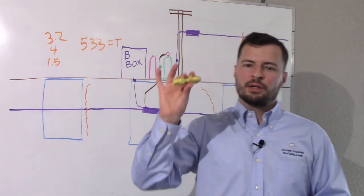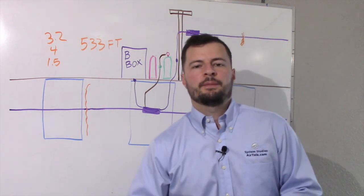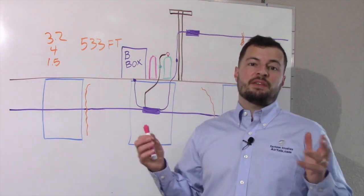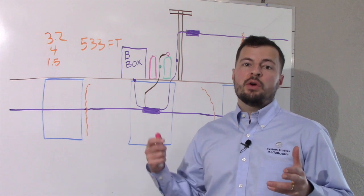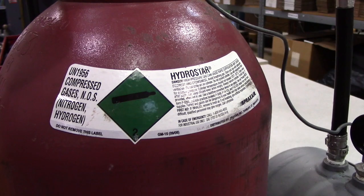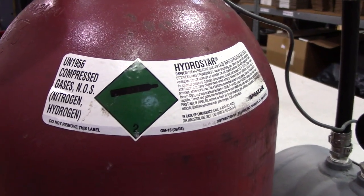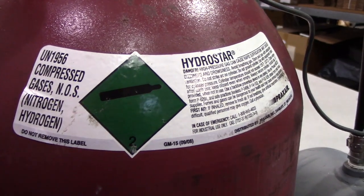To do this, you're probably going to need a reverse thread adapter for your tank. The tracer gas tank is a mix of hydrogen and nitrogen, and with our hydrogen detector, we can locate this mix of gas. The tracer gas should be no more than 5% hydrogen, and the tank should have a green label.